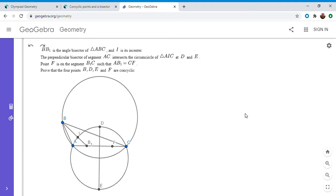Alright, so now I'm going to go over the solution. So we have a triangle ABC and BB1 is the angle bisector and I is the in-center of the triangle. The perpendicular bisector of AC meets the circumcircle of AIC at points D and E and F is on segment B1C so that AB1 is equal to CF and we want to show that B, D, E, and F are cyclic.